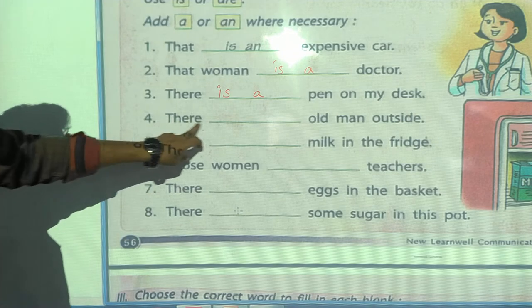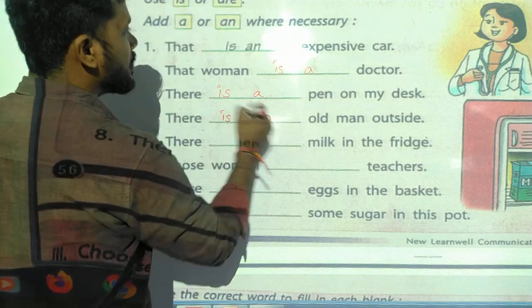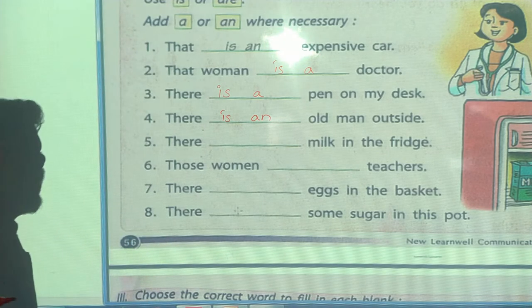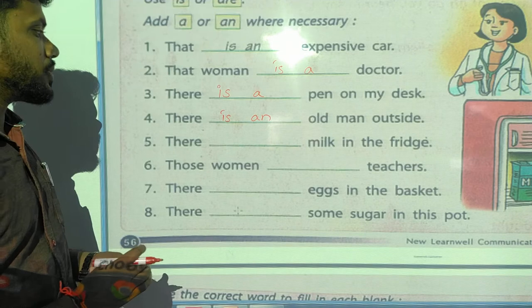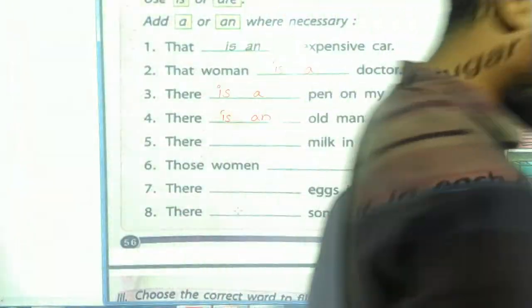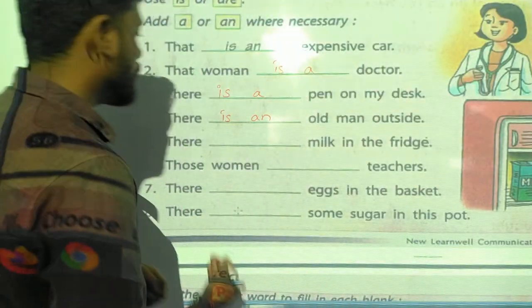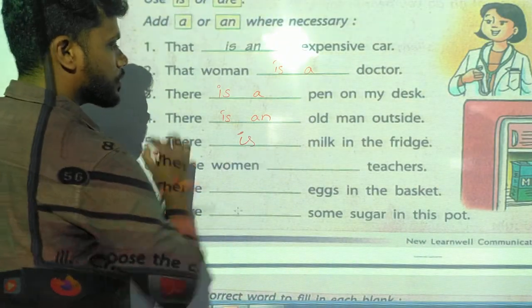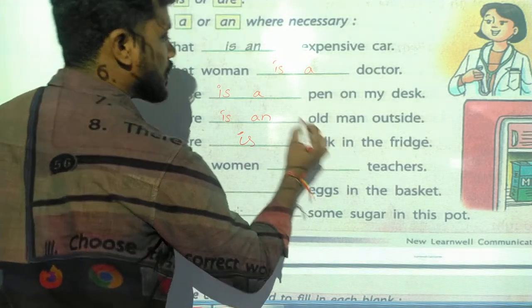Next: 'There is an old man outside.' Then: 'There is room in the fridge.' Next: 'Those women are teachers.' And: 'There are eggs in the basket.'